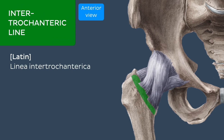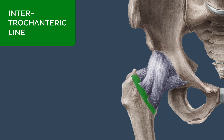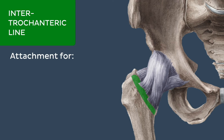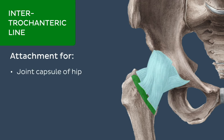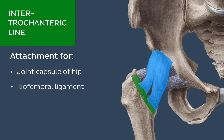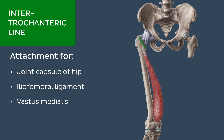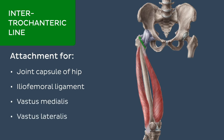The intertrochanteric line is a ridge located along the anterior aspect of the junction of the femoral neck and shaft. It traverses between the apex of the greater trochanter and a small tubercle on the distal part of the lesser trochanter, and functions as an attachment point for the joint capsule of the hip, the iliofemoral ligament, and the vastus medialis and lateralis muscles.